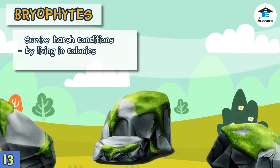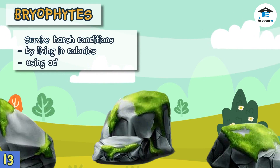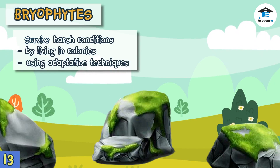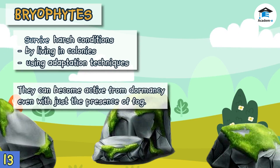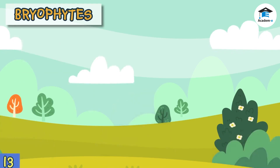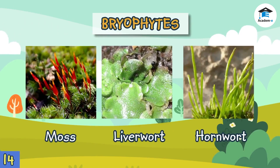Bryophytes live in many types of environments and are often found in colonies, which help the plants survive various harsh conditions. They have developed adaptation techniques to survive various environments, especially situations with little water — from being dormant, they may easily be activated with even just the presence of fog. Bryophytes include moss, liverworts, and hornwort.